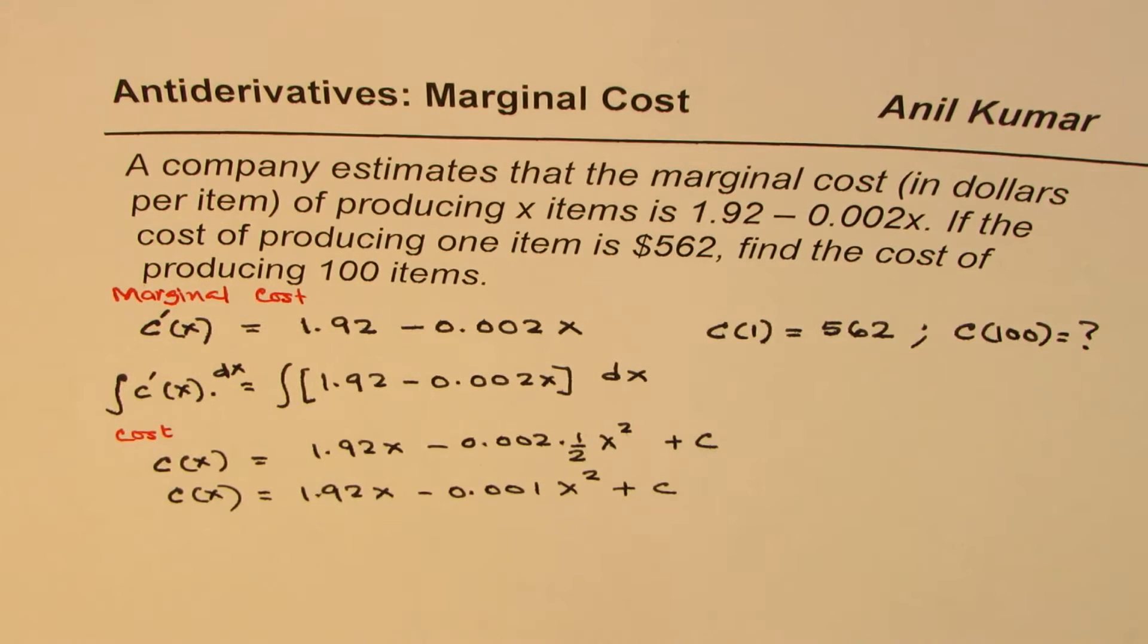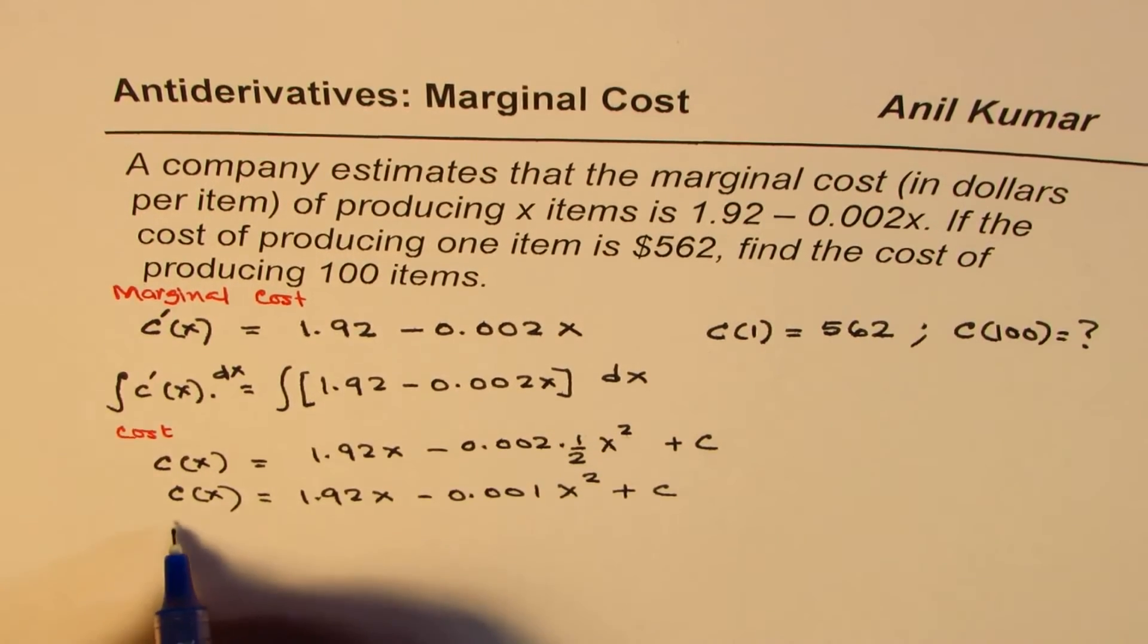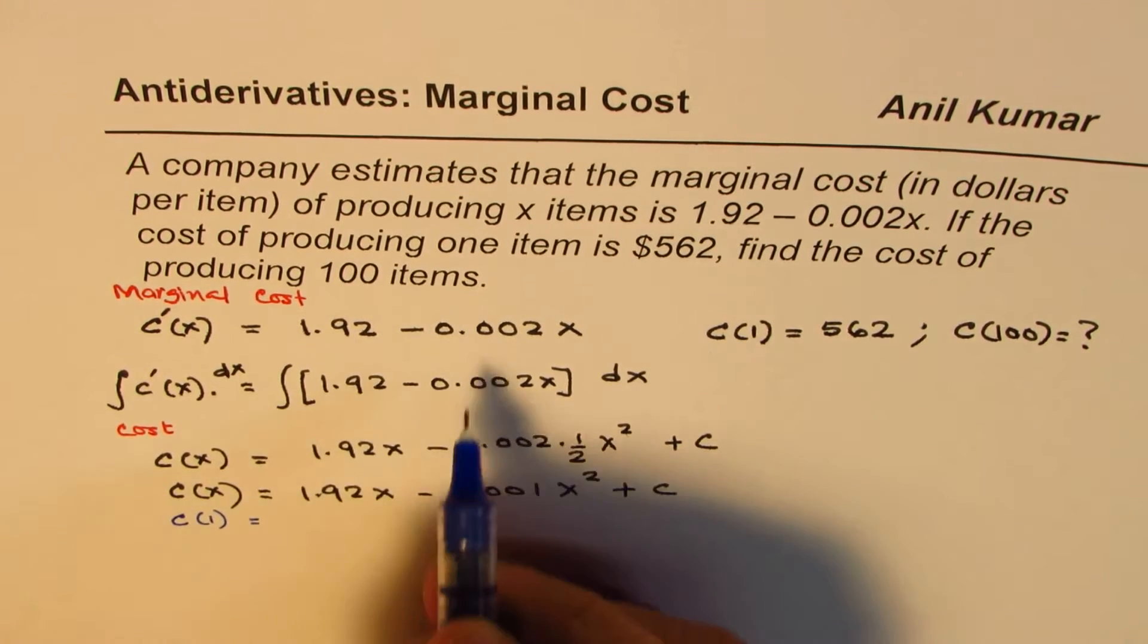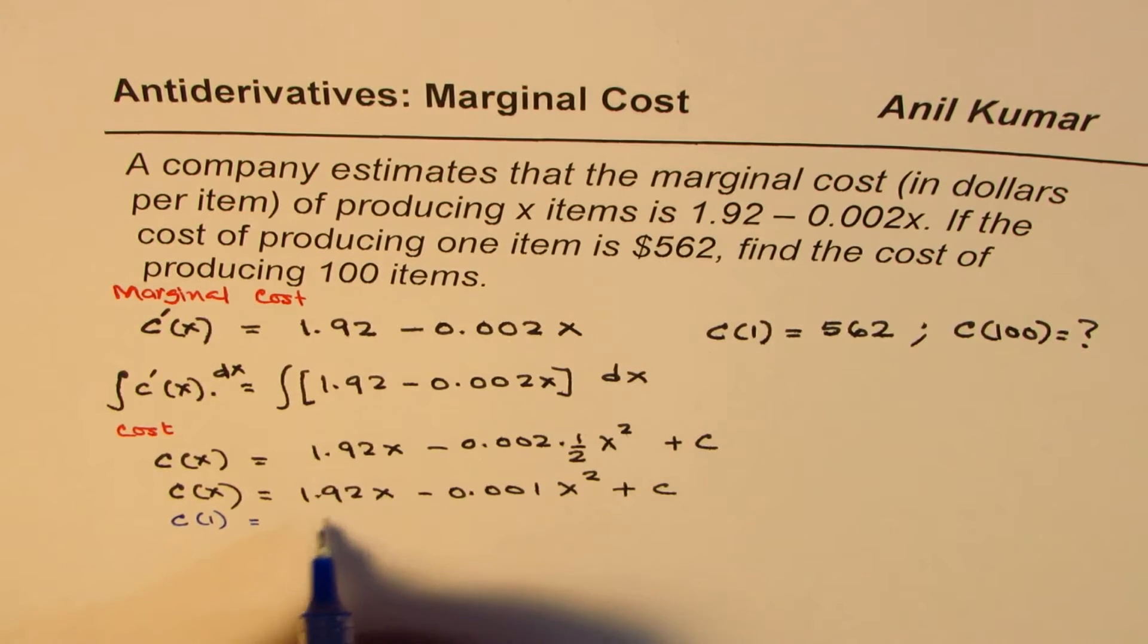To find the value of C, we'll substitute C(1) as 562. So we know the cost of one item is 562, so we'll substitute 1 here.